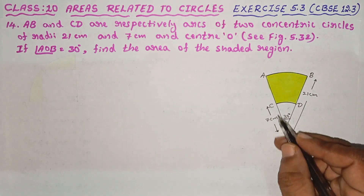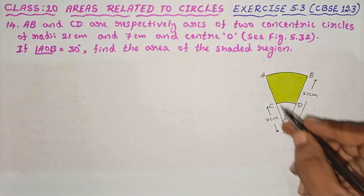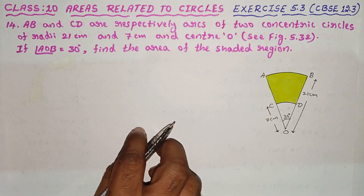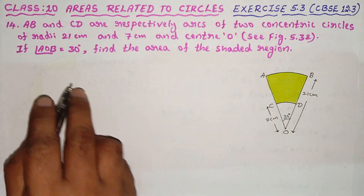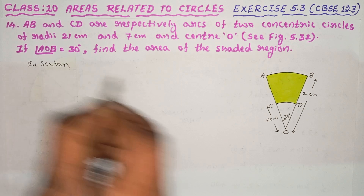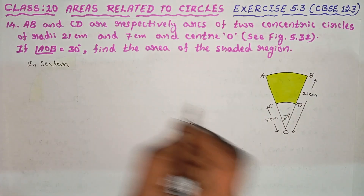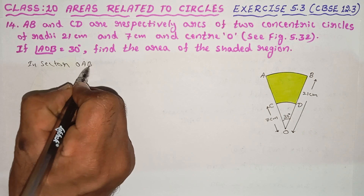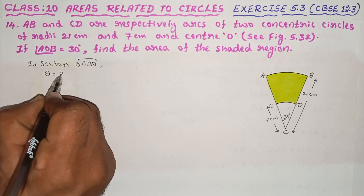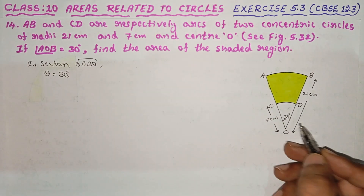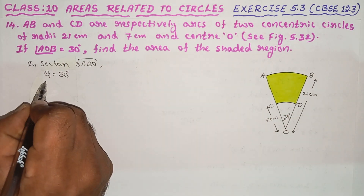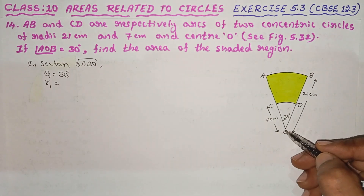AB and CD are respectively arcs of two concentric circles of radii 21 cm and 7 cm with center O.